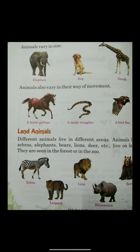Animals also vary in their way of movement. For example, a horse gallops. A snake wriggles. And a bird — birds are also animals — a bird flies. Can a horse fly? No. So all animals have different ways of movement.